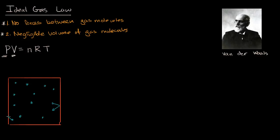Every time they bounce off the walls, they exert a little bit of force on that area. The more temperature you have, these things move around faster and you have more frequent collisions. The more molecules you have, there are more things to bounce around — and so those are things that, if you have more of them, increase the pressure, especially if you're holding volume constant.